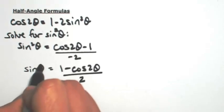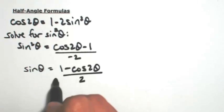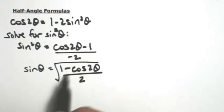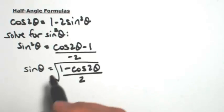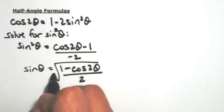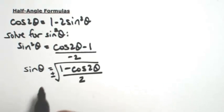So if I want just sine of theta, I would have to take the square root of both sides, and then it would be plus or minus.